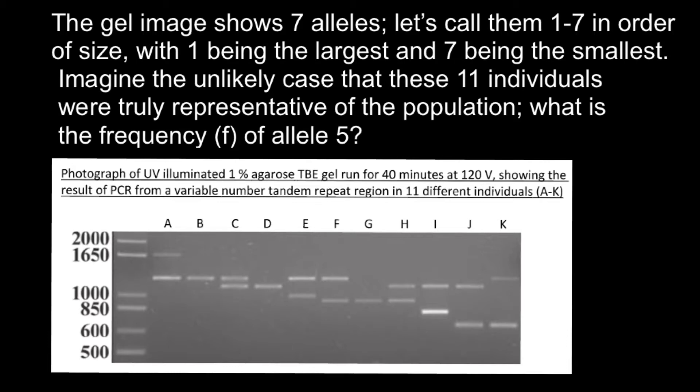The alleles are numbered in order of size, with one being the largest and seven being the smallest. Imagine the unlikely case that these 11 individuals were truly representative of the population. What is the frequency of allele 5? In order to solve this problem, we have to find out which alleles are biggest and which are smallest.